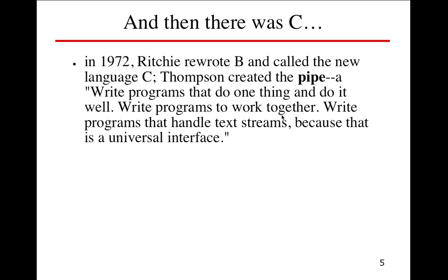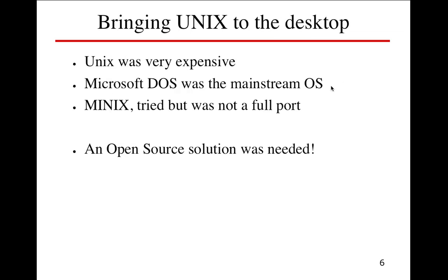Dennis Ritchie wrote B and then came up with C. C was pretty much the last core Unix language. Every Unix build has GCC on it - open source C compilers. We have the concept of the pipe, where we write programs to do something well and pipe information back and forth between them, sharing applications, utilities, and programs. Programs handle text streams through this universal interface created by the pipe concept.